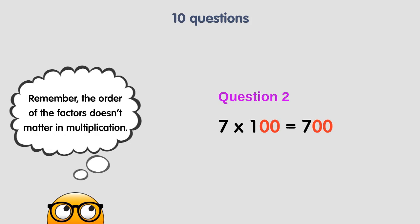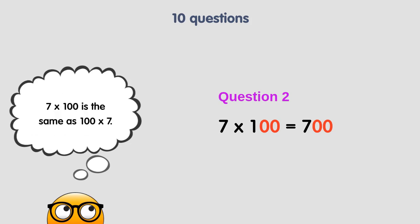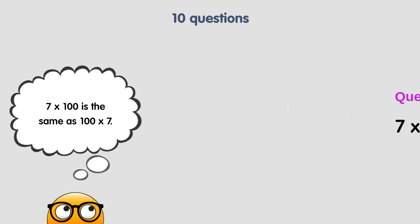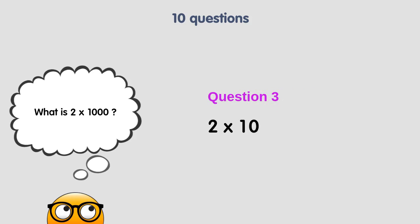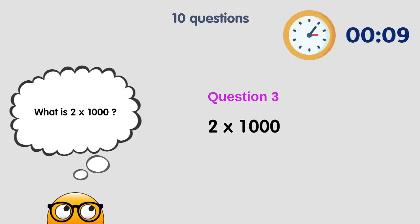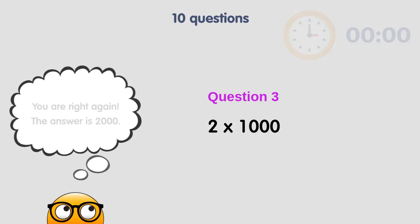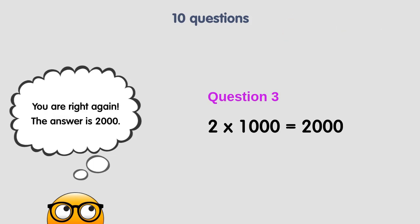Remember that the order of the numbers, or factors, doesn't matter in multiplication. 7 times 100 is the same as 100 times 7. What is 2 times 1000? You are right again. The answer is 2000. Adding three zeros at the end of 2, we get 2000.